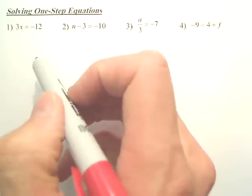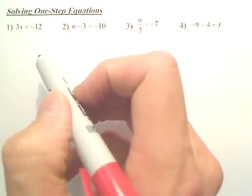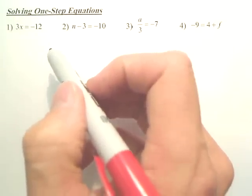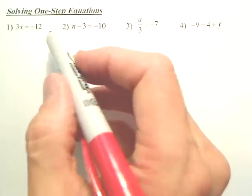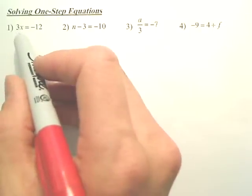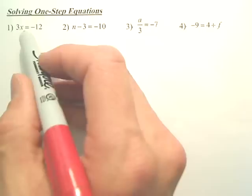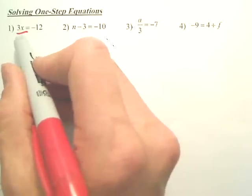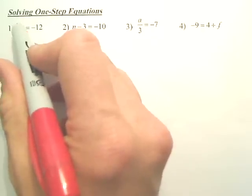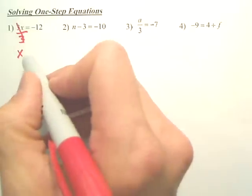But the way you figure these out, there's a procedure you need to learn, which most of you know. The procedure is basically to get the x by itself. Now that is 3 times x. What's the opposite of times? Divide. So if I go and divide by 3, won't that cancel? Leave me just x.